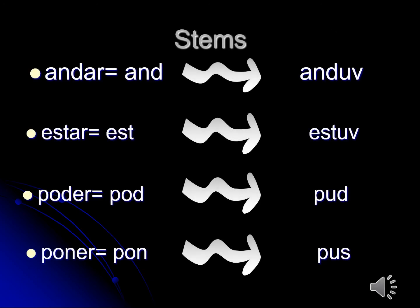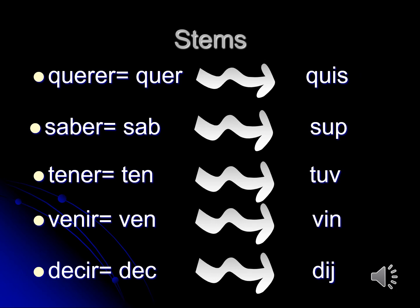For verbs with irregular stems, you just have to learn the stems. The verb andar — the stem becomes anduv. The verb estar — the stem becomes estuv. The verb poder — the stem becomes pud. The verb poner — the stem becomes pus. The verb querer — the stem becomes quis. The verb saber — the stem becomes sup. The verb tener — the stem becomes tuv. The verb venir — the stem becomes vin. The verb decir — the stem becomes dij.